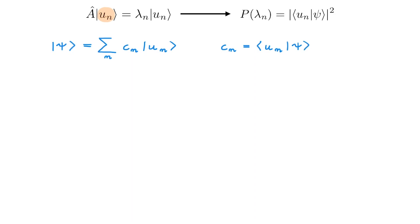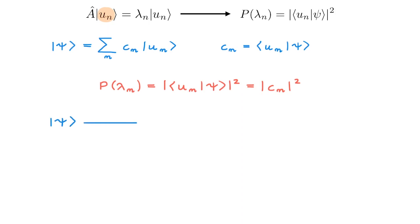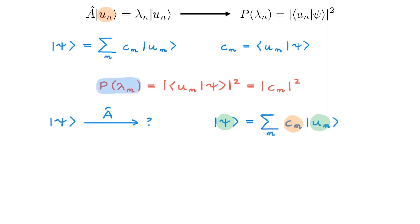This means that we can rewrite the probability P of measuring eigenvalue λn as also equal to the absolute value squared of Cn. So if our system is in state ψ and we want to measure property A, we write the state ψ in the basis of eigenstates of A, and the expansion coefficients Cn tell us the relative contribution of eigenstate un to state ψ, which in turn tells us how likely it is to measure the associated eigenvalue λn.